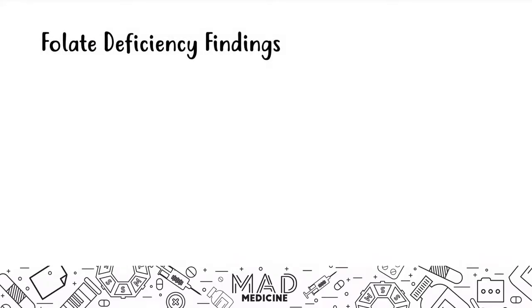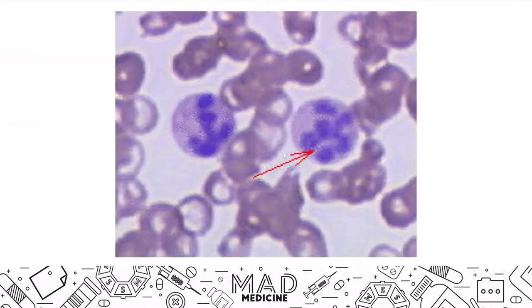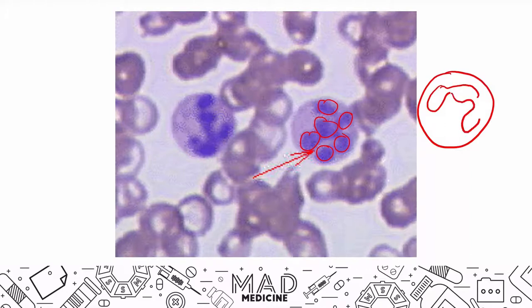The key findings: you're going to see macrocytic megaloblastic anemia, but the most important and pathognomonic finding — very high yield — is hypersegmented neutrophils. This occurs in megaloblastic anemia. A hypersegmented neutrophil has more than three segments, whereas normally a neutrophil has about three segments. During the production of a neutrophil, it was not able to replicate enough and get rid of those extra segments in the nucleus — that's why you have hypersegmented neutrophils.